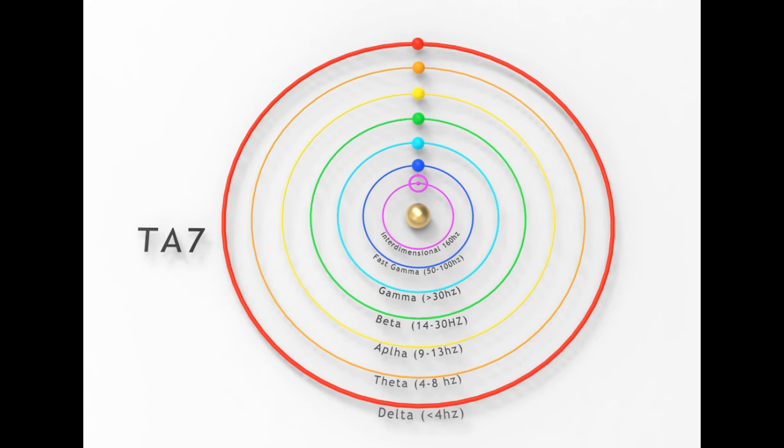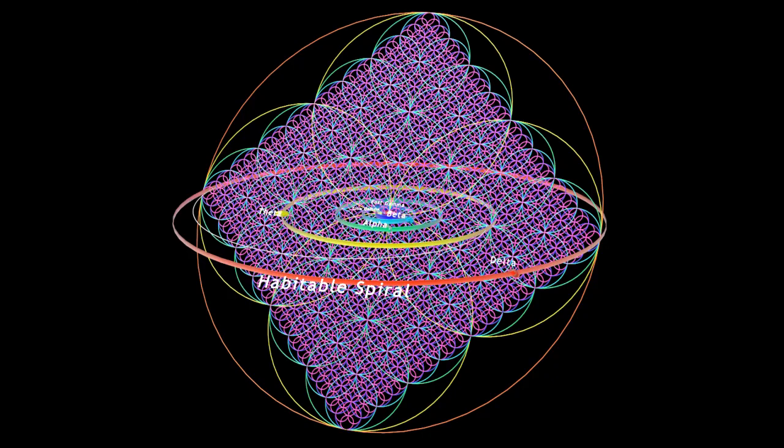You could say in a physical sense that our consciousness is created by waves consisting of delta to fast gamma. Each of those vibrations would then be tuned to a specific orbital rate and distance.